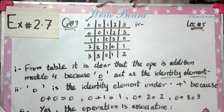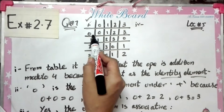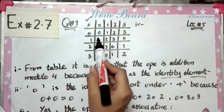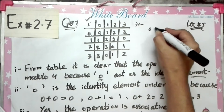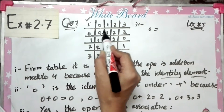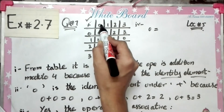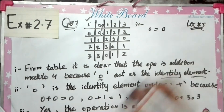So if the operation were multiplication, the identity element would be 1, but since our identity element is 0, for each element we find its inverse by locating where 0 appears in the row. The first element is 0, so the inverse of 0 is 0.